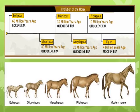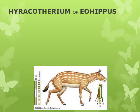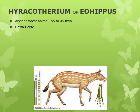The development of the horse took place over the course of at least 55 million years, beginning during the Eocene. We can see different types of horses which we will study one by one. Hyracotherium, or Eohippus, is the small ancient forest animal of the early Eocene that lived about 55 to 45 million years ago. It is also known as the Dawn Horse, and its fossils have been recovered from North America and Europe.